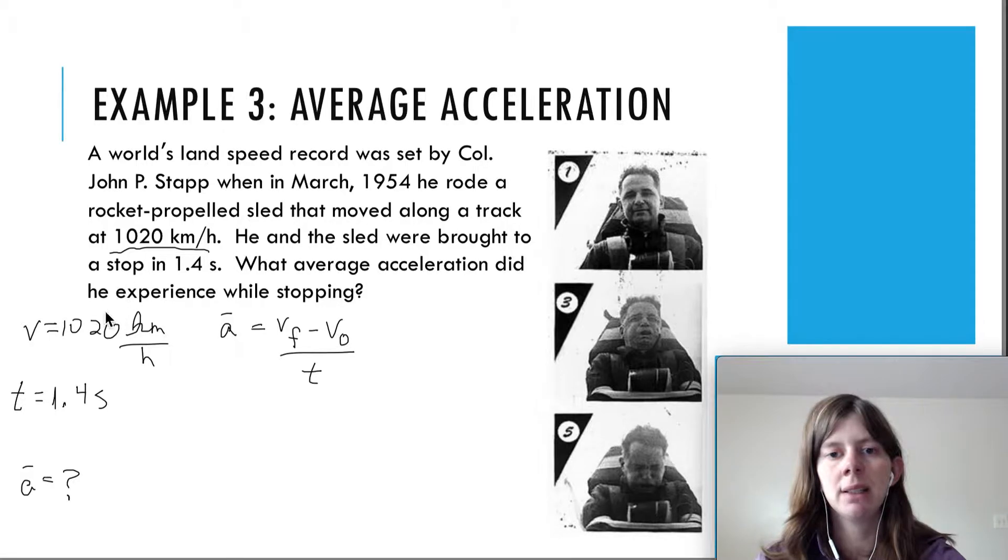So, let me put a zero here. And then he was brought to a stop. That's a key word here. Stop or rest means velocity is zero. That means the final velocity was zero. And now, all of a sudden, you do have everything that you need. Now, I do need to erase this equation for a second, because it's in the way here. This initial velocity is not in the correct units.